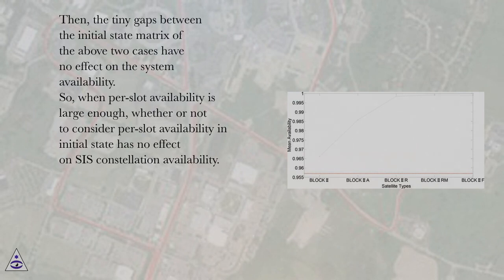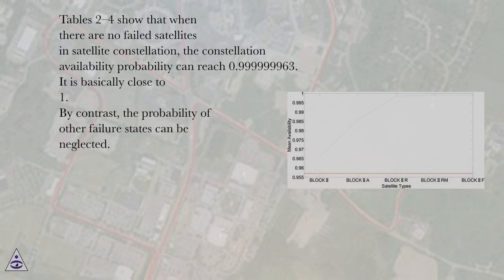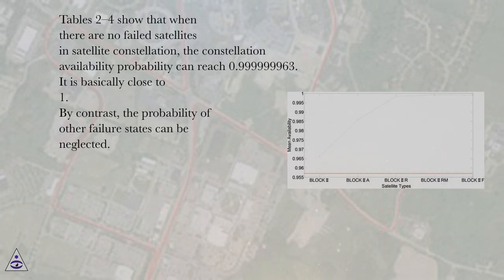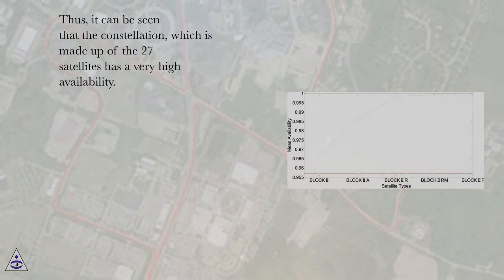So when per-slot availability is large enough, whether or not to consider per-slot availability in initial state has no effect on CIS constellation availability. Tables 2 to 4 show that when there are no failed satellites in the satellite constellation, the constellation availability probability can reach 0.9999999963, which is basically close to 1. By contrast, the probability of other failure states can be neglected. Thus, the constellation made up of 27 satellites has a very high probability.